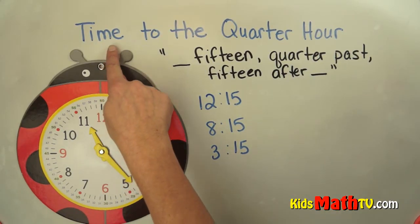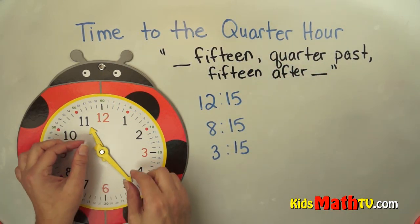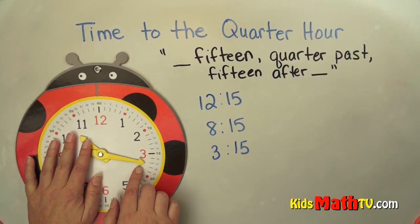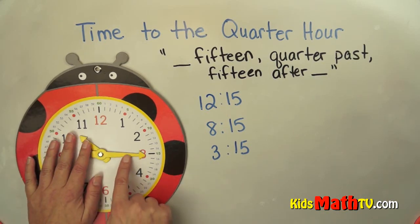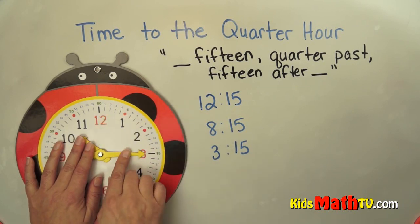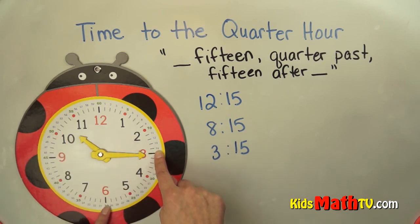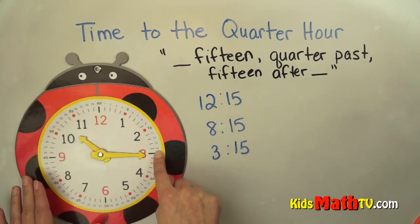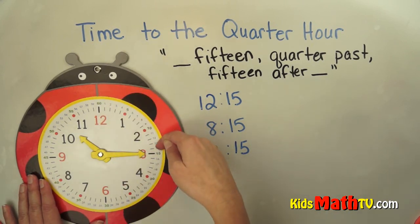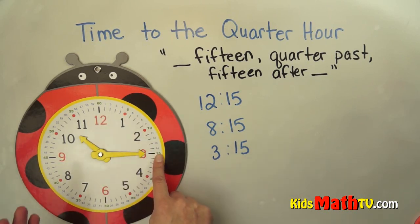In this lesson we are going to talk about time to the quarter hour. When we're talking about the quarter hour, the minute hand — the long hand — is always on the 3. It's always one quarter past whichever hour. So one quarter is at the 15: 5, 10, 15 after. So 15 after whichever hour it is.